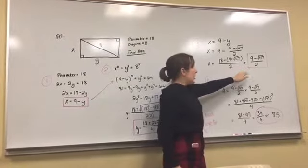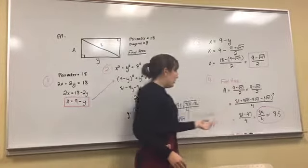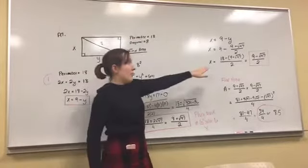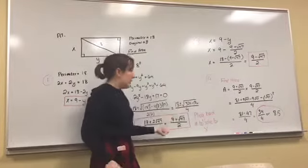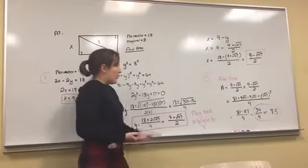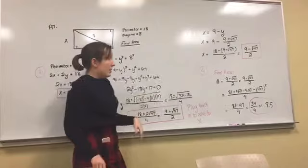In actuality it doesn't really matter. You want the y to be the longer one, so that's why you make this one plus, and then that one's going to end up being minus, the exact opposite of what this one is in terms of the square root of 47. That's why I took the plus one here and that's why that one ended up being minus.